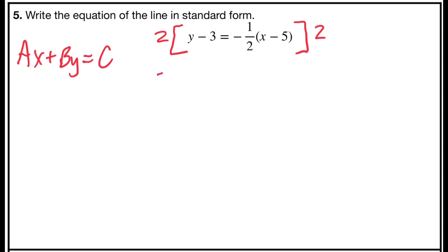2 times y is 2y, and 2 times negative 3 is negative 6. On the right side, I have 2 divides into 2 one time, and 1 times negative 1 is negative 1 times x minus 5. So now I've cleared the fractions from the problem.